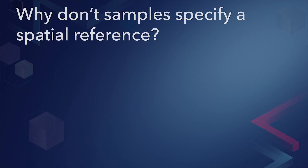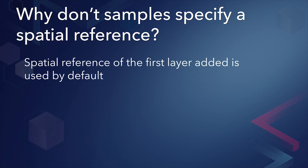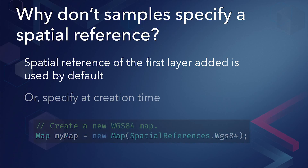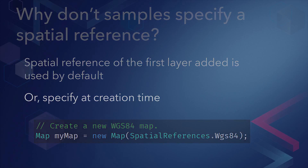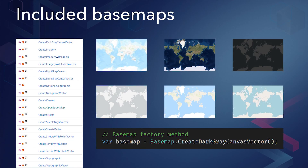If you've worked with our public samples or dev labs, you've probably noticed that few explicitly set a spatial reference. ArcGIS Runtime will use the spatial reference of the first layer or base map you add to the map. Alternatively, you can explicitly specify a spatial reference at creation time. For example, the default base maps are on the Web Mercator spatial reference. If you create a map and add one of those base maps, the map will adopt the base map spatial reference.